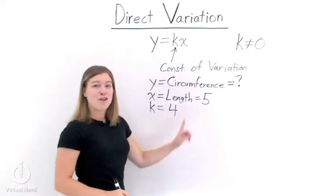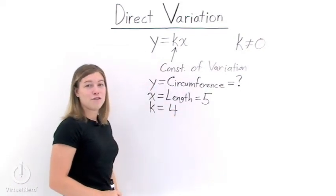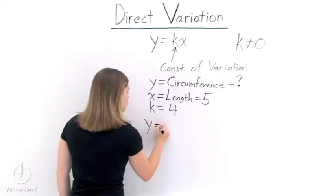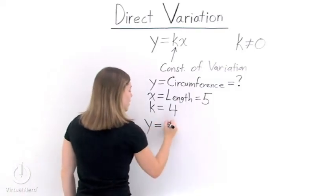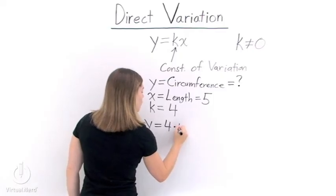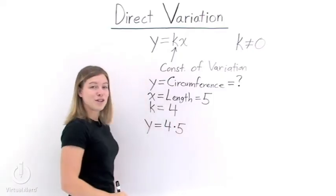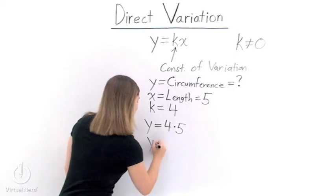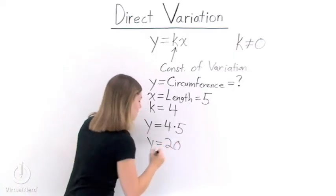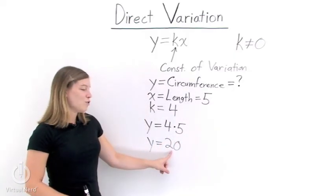Now we have all of our pieces. Let's plug them into our formula for direct variation: y equals k times x, which is 4 times 5. When we simplify, we get y equals 20. So, the circumference of our square is 20.